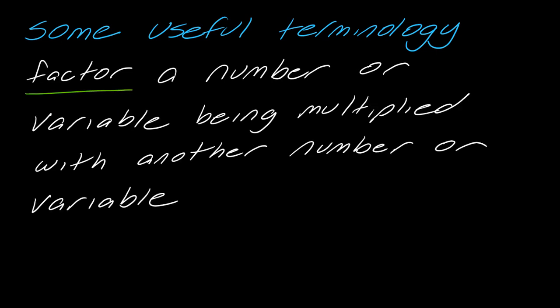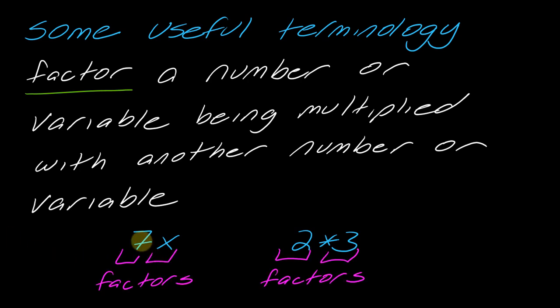Next, we have a factor. This is a number or variable being multiplied with another number or variable. I have two different examples here. With 7x, this is a factor and this is a factor, so there are two factors here. And here with 3 times 3, these are each a factor. So factoring has to do with multiplication. Terms have to do with addition and subtraction.